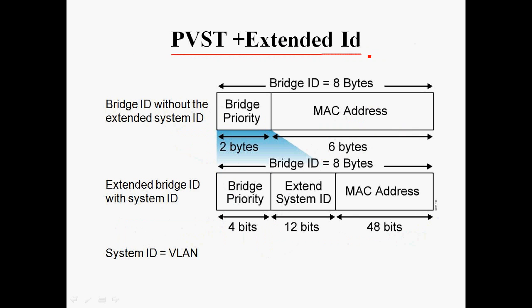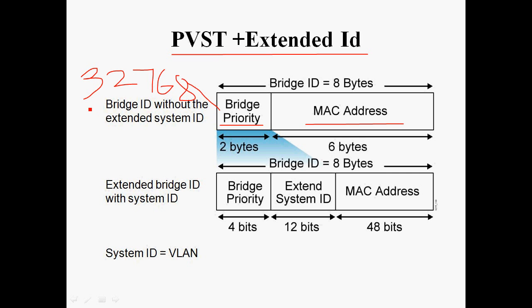Per-VLAN Spanning Tree Plus Extended ID. In Spanning Tree Protocol, every 2 seconds Bridge Protocol Data Units (BPDUs) are sent to the neighboring switch. In those BPDUs, it contains bridge ID, priority value, and MAC address. The bridge priority is 32768, which is common for all Cisco Catalyst switches. The root bridge is selected based on MAC address. But in Per-VLAN Spanning Tree Plus, the bridge priority includes a System ID which indicates the VLAN ID.